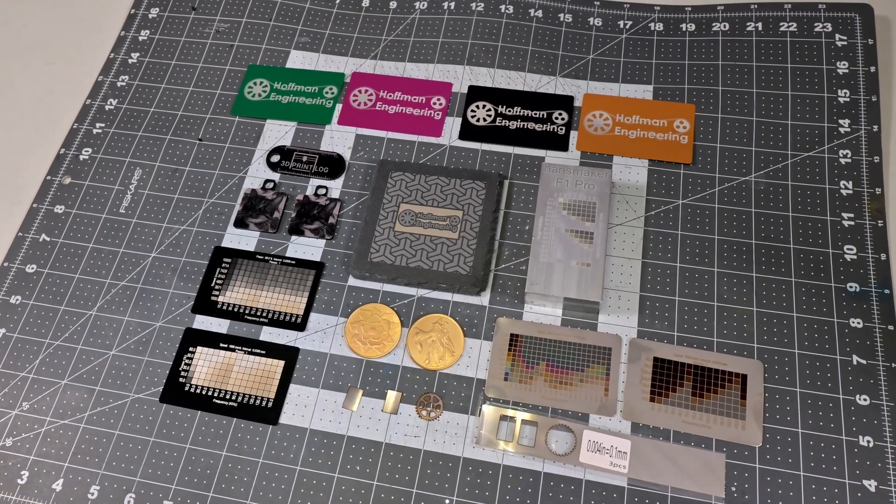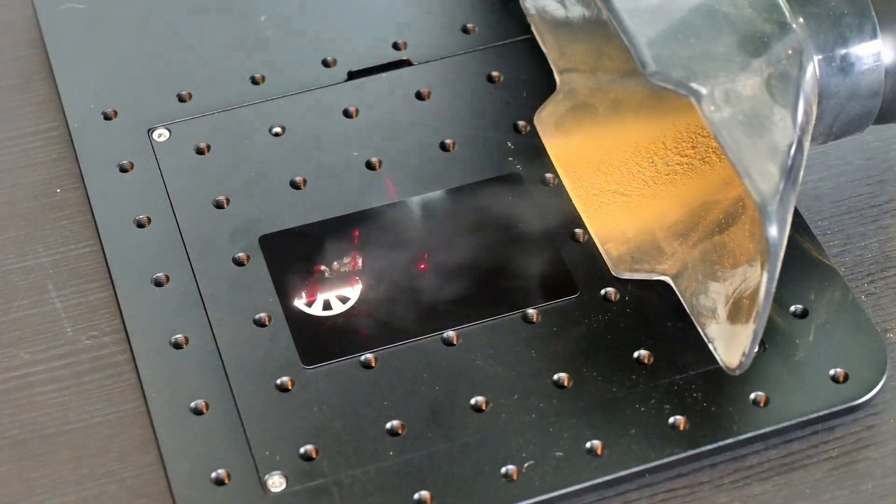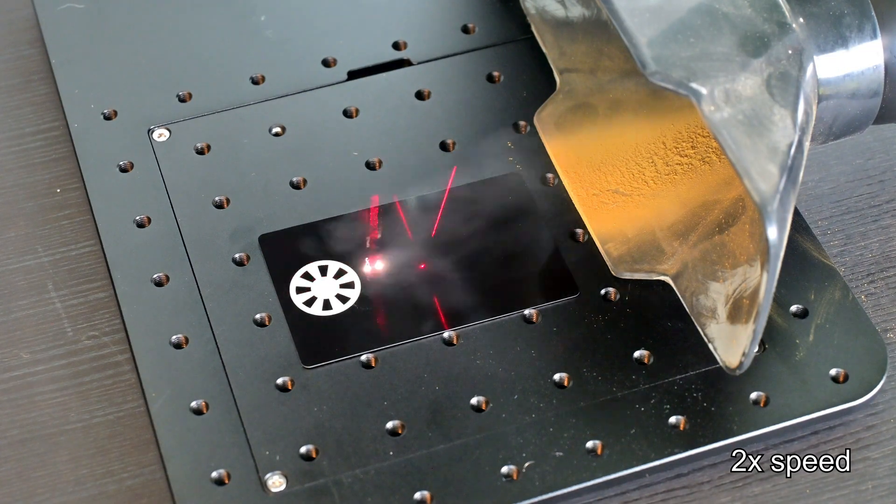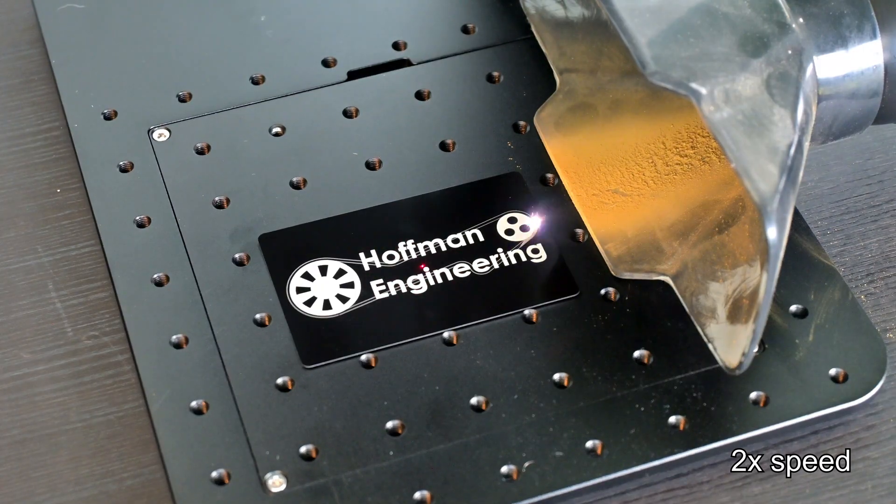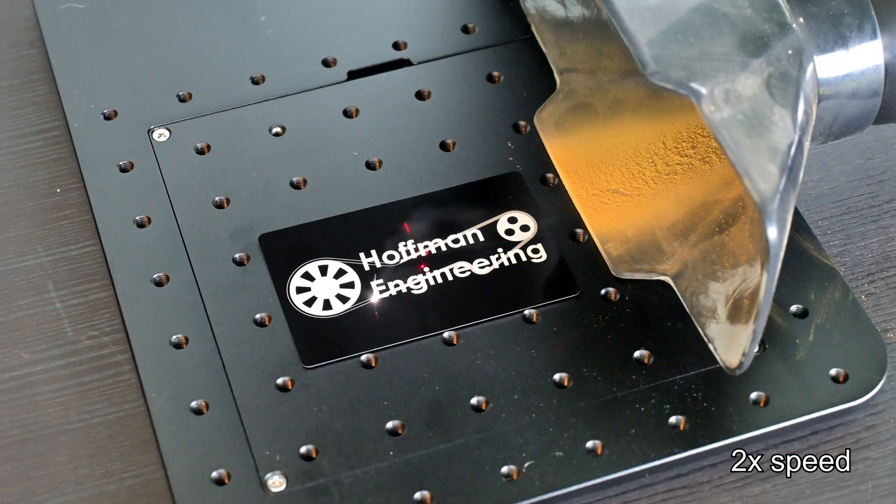All of my tests were run using a fume extractor by Omtek. I highly recommend picking up an extractor for any fiber laser, which will remove particles and fumes from the air. Handsmaker does not currently sell any extractors, but I wanted to mention that I used one during my tests.